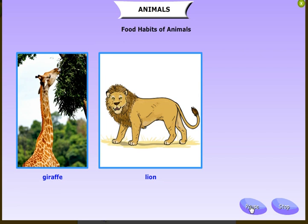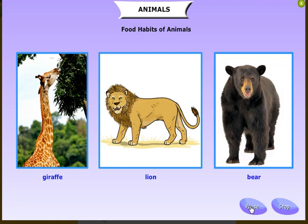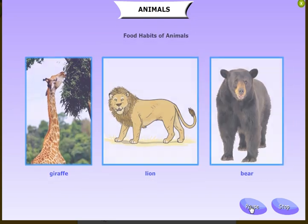Animals that eat both plants and the flesh of animals are called omnivores. Some omnivore animals are bear, crow, and dog.